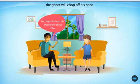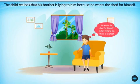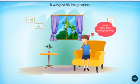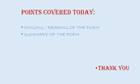But the boy plans to peep inside someday. The child realizes that his brother is lying to him because he wants the shed for himself. The child also realizes that nobody is actually staring at him — it was just his imagination. So he decides to go into the shed someday, but not just yet.